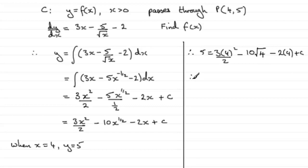So if we work this out, we've got 5 equals, well, 4 times 4 is 16, divide by 2 is 8, and 3 times 8 is 24. Square root of 4 is 2, 10 times 2 is 20, so minus 20, minus 8 plus c. So if we work this out, we've got 24 take away 20, which is 4, take away another 8, that's minus 4, so therefore we've got 5 equals minus 4 plus c. And so if I add 4 to both sides, I end up with c equaling 5 plus 4, which is 9.